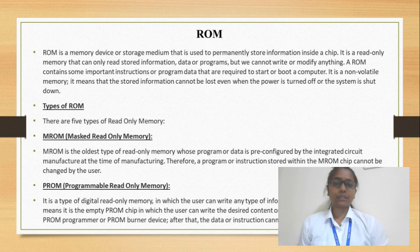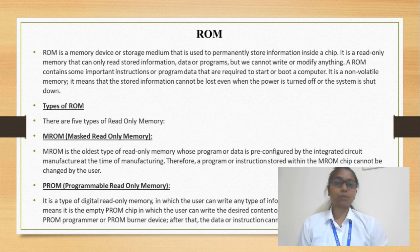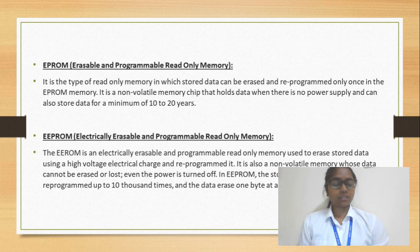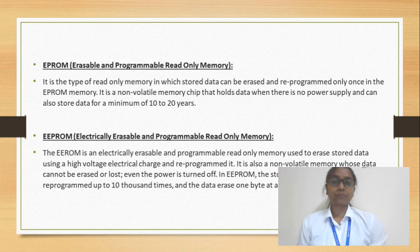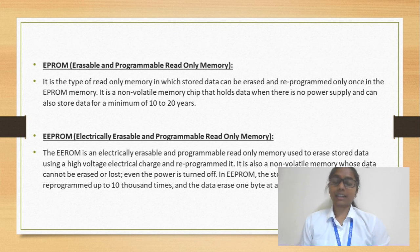The second is PROM — Programmable Read Only Memory. PROM can be written only one time; we cannot erase or modify it. The third is EPROM — Erasable and Programmable Read Only Memory. In this case, we can erase data or any program, but only one time, by exposing it to UV light.